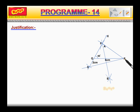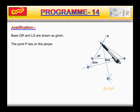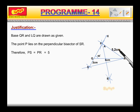Justification. Base QR and angle Q are drawn as given. The point P lies on perpendicular bisector of SR. Therefore, PS is equal to PR, which is equal to 5.2 cm.